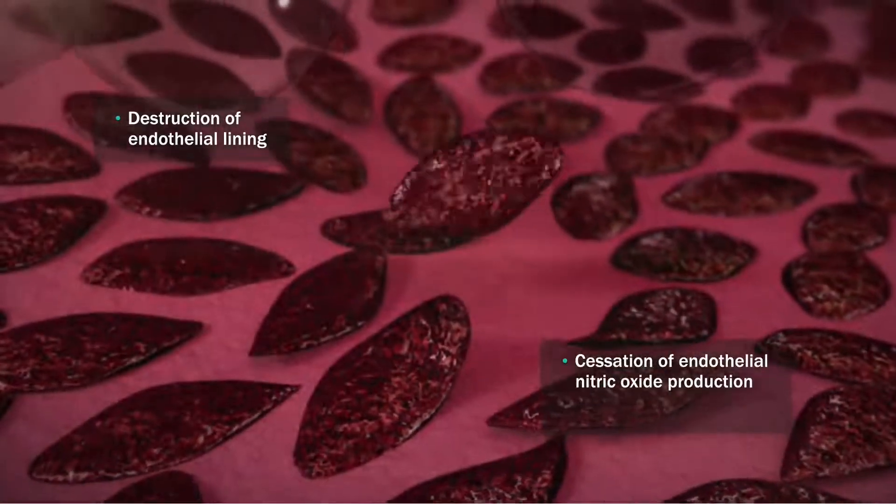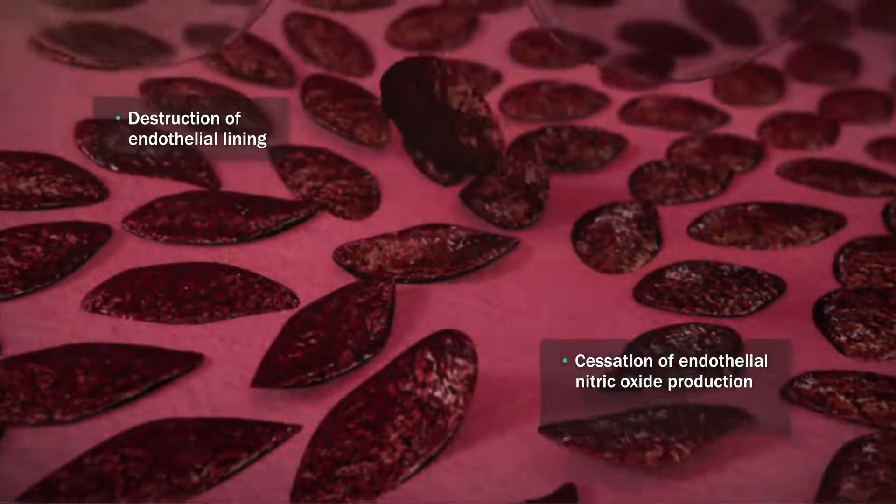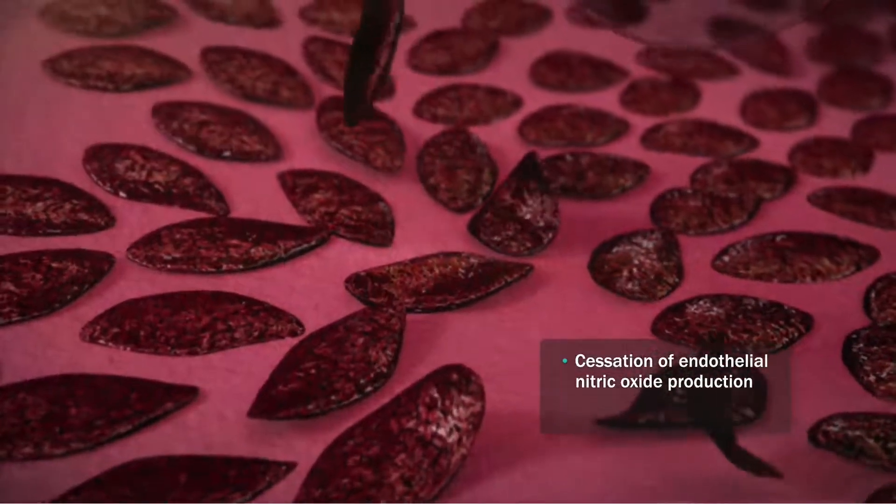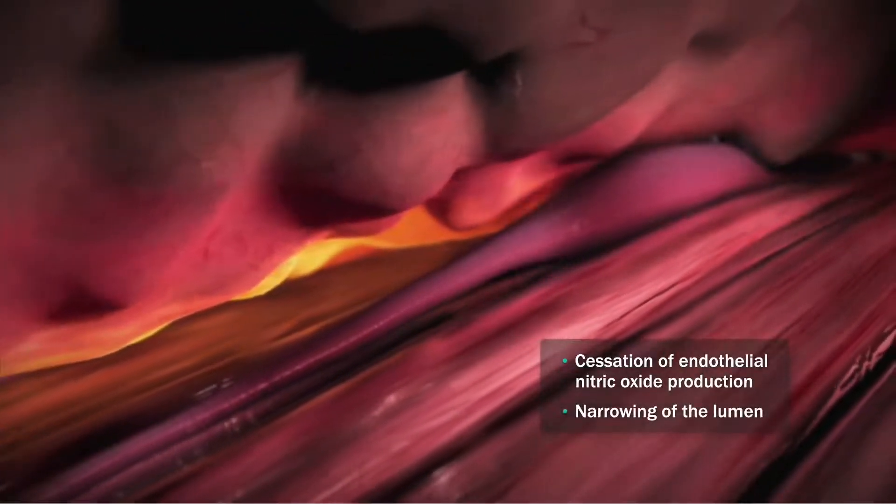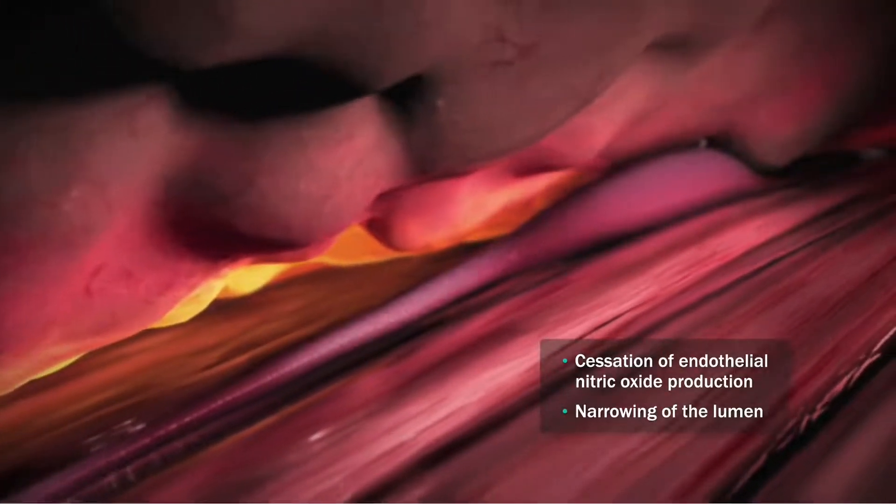Endothelial nitric oxide, which normally maintains vein patency by regulating vascular smooth muscle tone, is no longer produced. The smooth muscle in the vein contracts, narrowing the lumen of the vein until it has almost no volume.